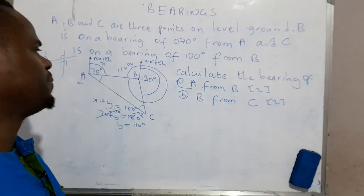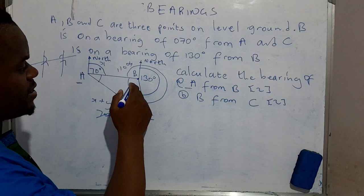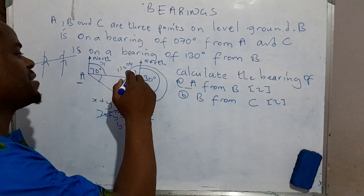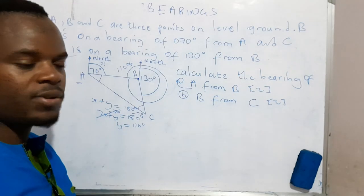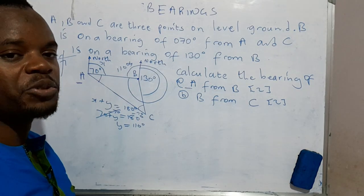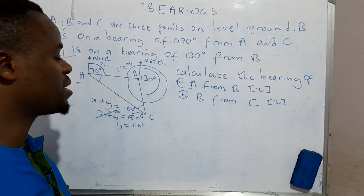So that's 110. Now what is the size of this angle here? What we need to realize is this angle, that angle, and that angle are angles on a point. And when they are added, they should give us 360, because angles on a point add up to 360.